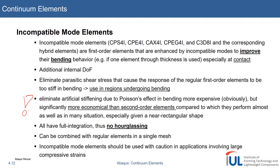You get the bending advantages of second-order elements — not as perfect, but almost as good — and they are computationally more efficient, closer to first-order elements. Because they use full integration, you have no hourglassing. The cool thing is that you can combine them with regular elements in a single mesh, which lets you use these elements specifically in regions of interest where you might face problems due to bending.